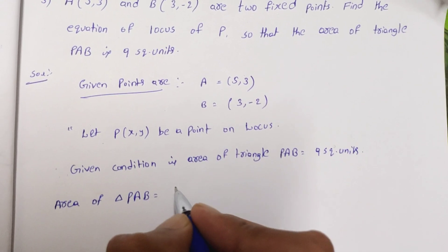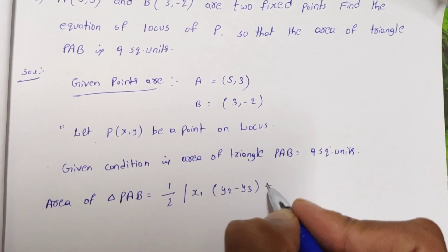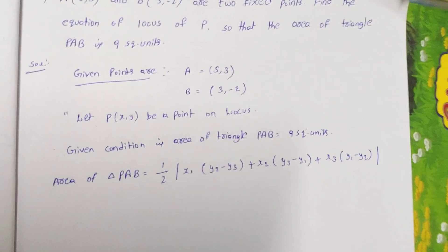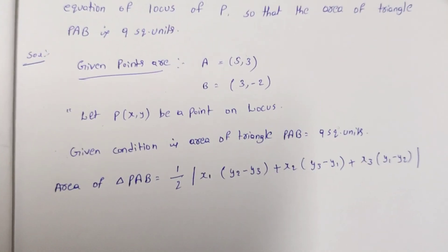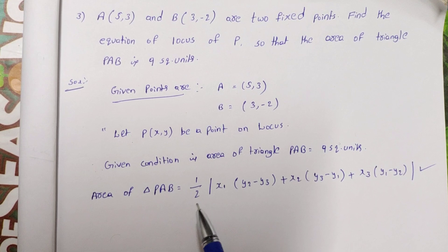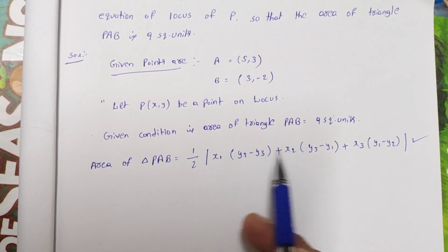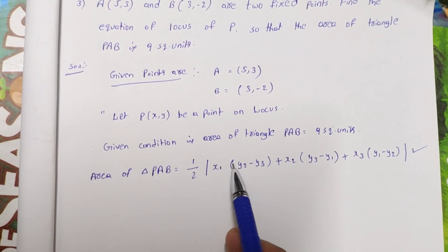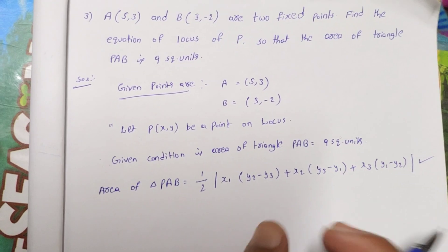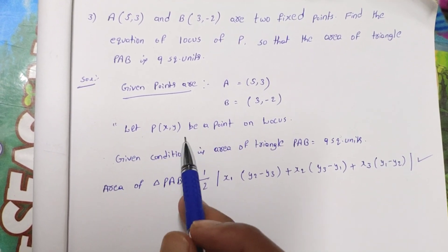Area of triangle PAB is equal to one-half mod of: x1(y2 minus y3) plus x2(y3 minus y1) plus x3(y1 minus y2). This formula is very, very important. You can identify the location using this area of triangle formula with coordinates x1, x2, x3 and y1, y2, y3.